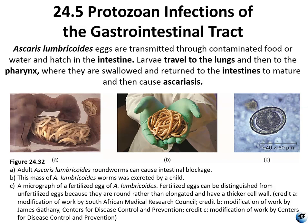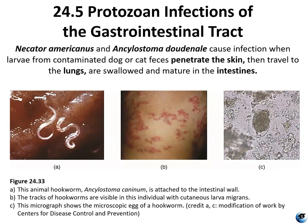Necator americanus and Ancylostoma are hookworms with larvae that originate in dog or cat feces. They can penetrate intact skin and travel all the way to the lungs; they are then swallowed and end up in the intestines where they reproduce. These are the worms that veterinarians test for in new kittens or puppies — those worms can dig into your skin, end up in your lungs, and eventually reproduce in your intestines.